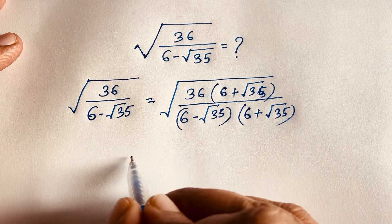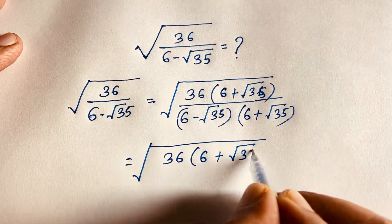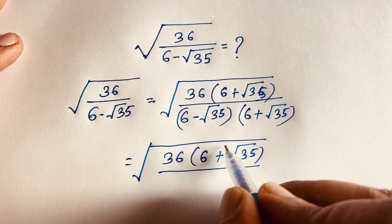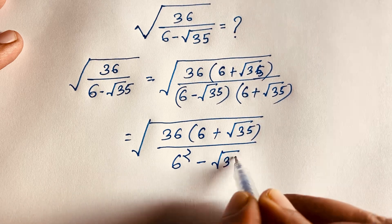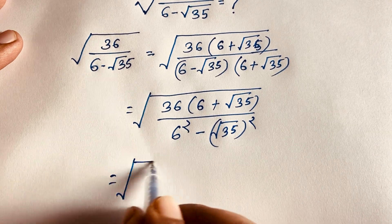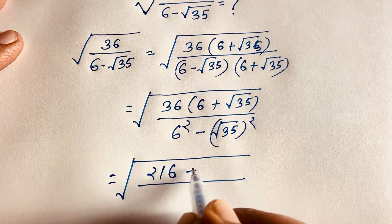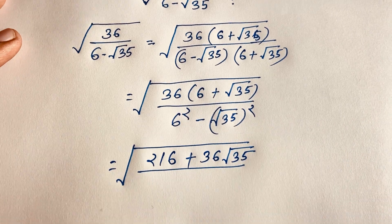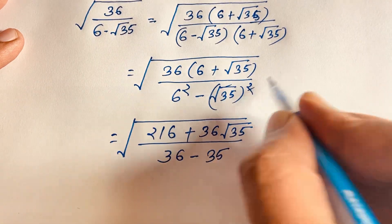This expression becomes square root of 36 times (6 plus square root 35) over — and in this expression you can easily see it will be (a plus b)(a minus b) equals a squared minus b squared. So we get 6 squared minus (square root 35) squared, which gives us 36 minus 35. The numerator expands: 36 times 6 is 216, plus 36 times square root 35.